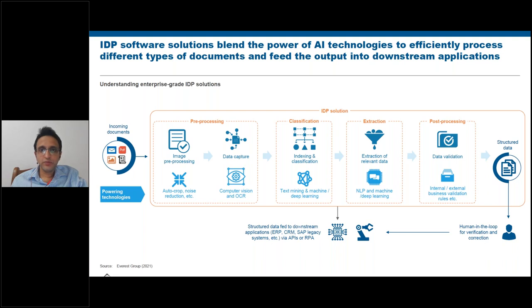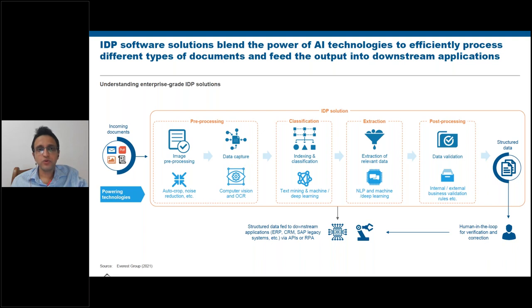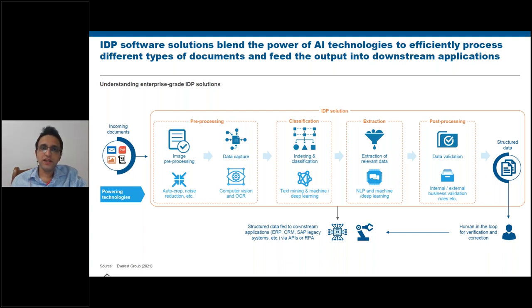The system can also validate the extracted structured data. For example, the IDP system can compare an extracted signature against one already on record. After validation, the extracted information is passed to downstream systems — core systems of record, ERPs, CRMs — for automated data entry or further processing. This is essentially how an IDP solution works: identifying, extracting, and passing data elements to downstream systems.